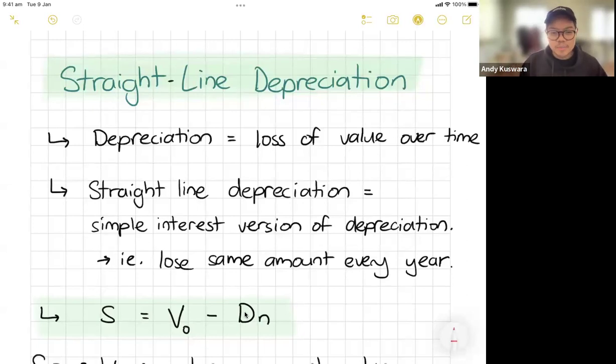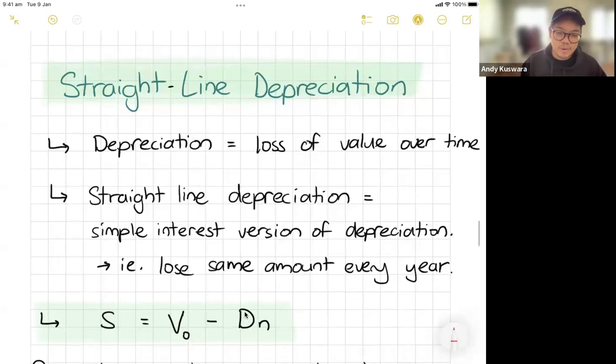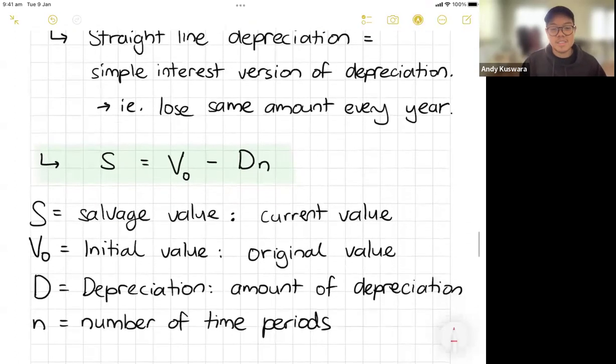Now, you're going to have this formula here: S equals V0 take away Dn. That there's going to be your straight line depreciation formula. Now, I know these are all letters that we haven't seen. We're used to I, P, R, and N. But these ones here is similar, but we're going to talk about these things here.